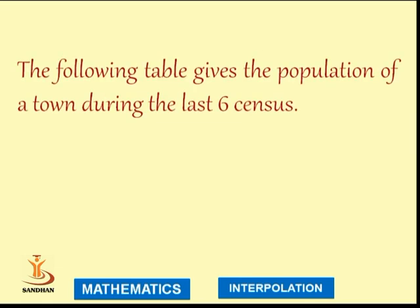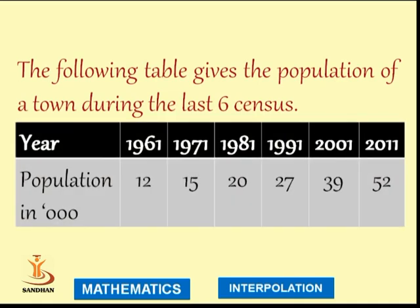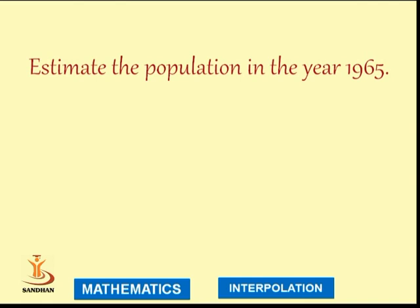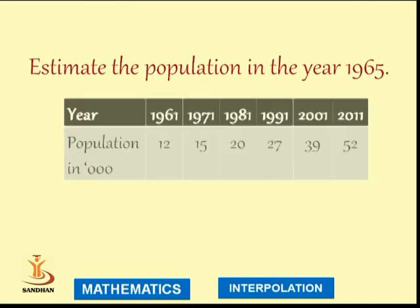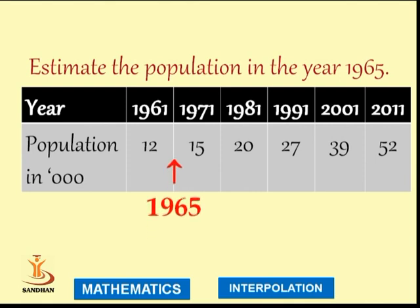Let us take an example. The following table gives the population of a town during the last six census: years 1961, 1971, 1981, 1991, 2001, and 2011, with population given in thousands. We are supposed to estimate the population in the year 1965. Given this table, the first task is to compute the forward difference table.